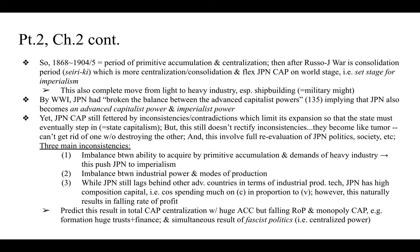The period between 1868 and 1904 to 1905 was a period of primitive accumulation and centralization. After the Russo-Japanese War was the consolidation period or seiriki, during which there was more centralization and consolidation, more flexing of Japanese capital on a world stage. This, says Noro, set the stage for imperialism and completed the move from light to heavy industry — especially shipbuilding, which at that time basically equaled military might.